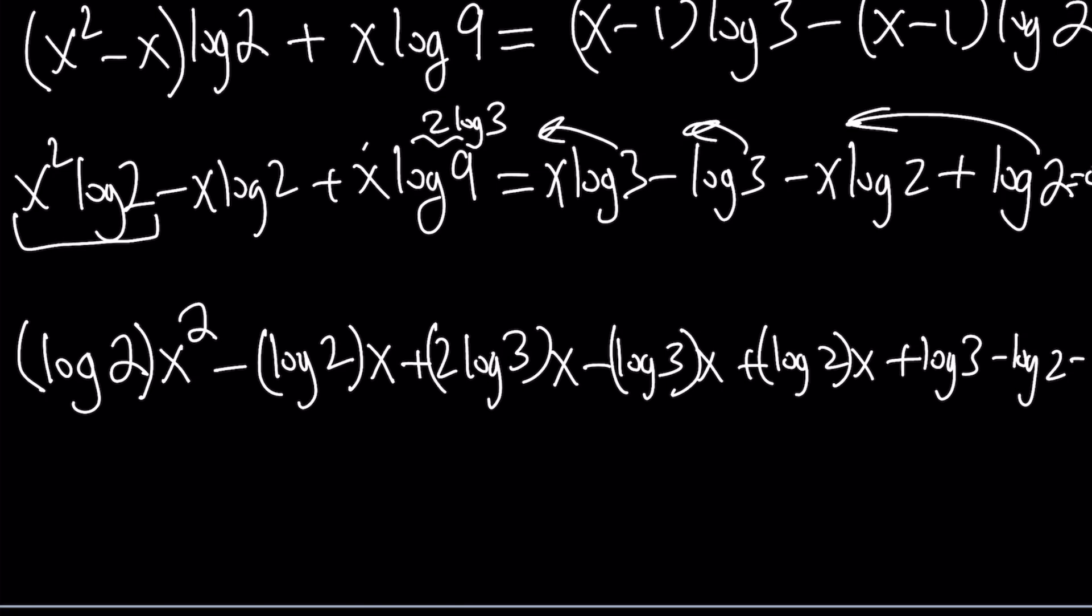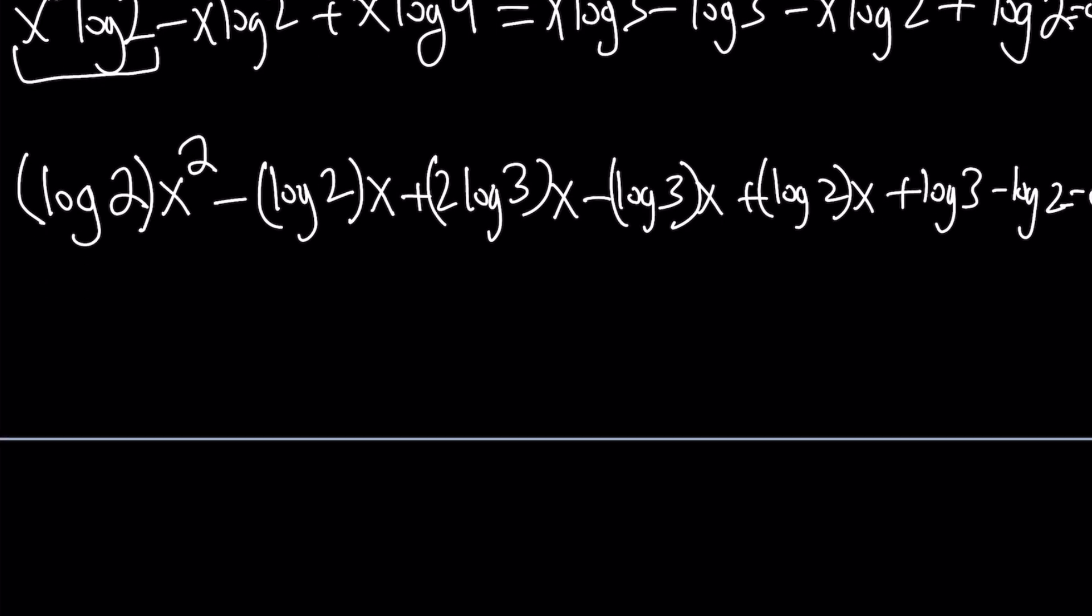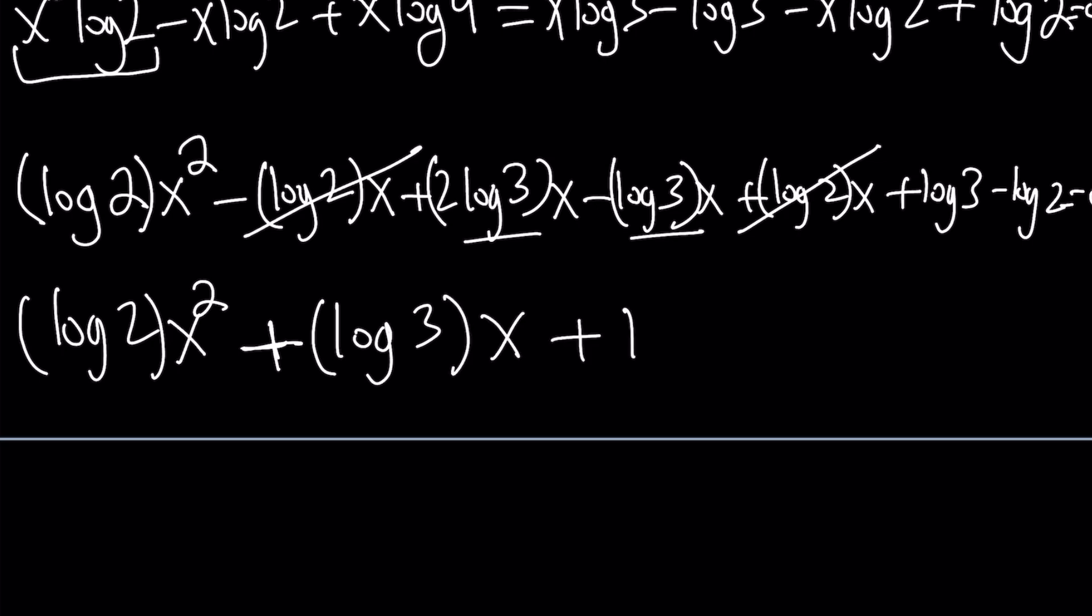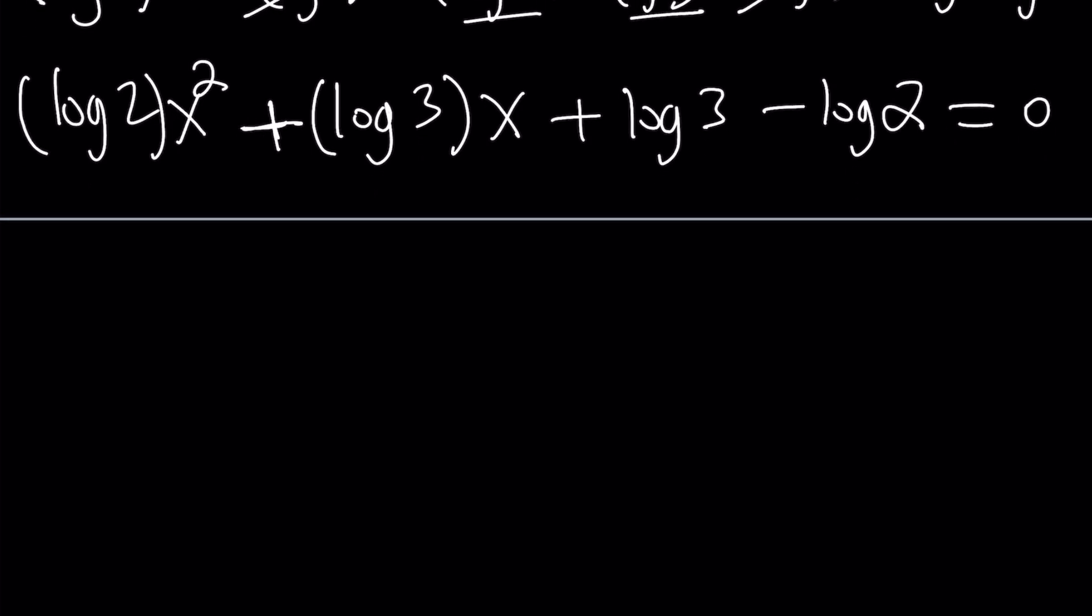This is equal to 0. Now let's go ahead and put the coefficients of x together. 2 log 3x and minus log 3x is going to give us log 3x. These two are going to cancel out. So we basically end up with log 3 as the coefficient of x only, and then plus log 3 minus log 2. So it's fairly simple after all these simplifications.